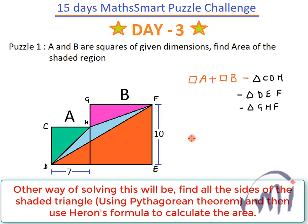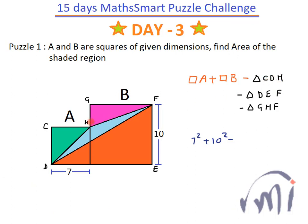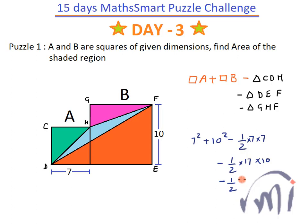So area of square A is 7 squared and the area of square B is 10 squared, minus the area of triangle CDH. CDH is a triangle whose base is CH and height is CD. So it will be minus 1/2 times 17 times 10, and then minus area of triangle GHF. This much is 7, so remaining GH will be 3. So it will be 1/2 times 3 multiplied by GF which is 10.